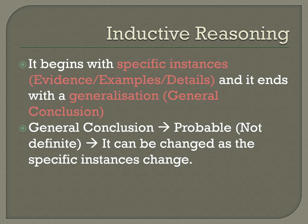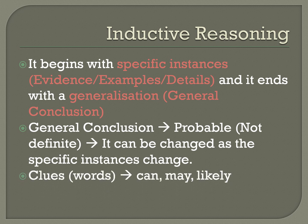The conclusion can change as the specific instances change. If your instances or examples change, the conclusion can also change because the conclusion is not definite — it is indefinite. Some clue words to identify inductive reasoning are: can, may, likely, possibly, probably. Since the conclusion is general and not definite, these words indicate things that are not certain or are general.